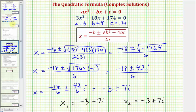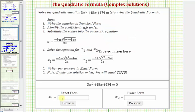So going back to the previous slide, we have negative 3 minus 7i, which would come from the quadratic formula here where we have minus. And x sub 2 equals negative 3 plus 7i, where in the quadratic formula we have a plus sign here.